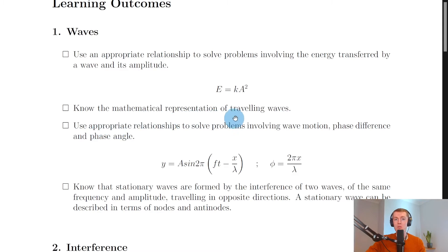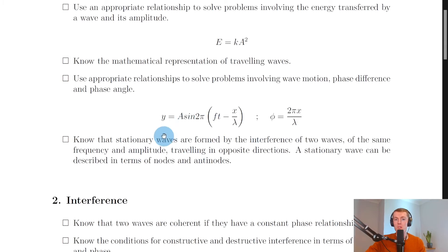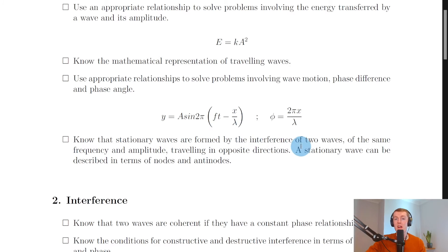You also need to know the mathematical representation of travelling waves and use appropriate relationships to solve problems involving wave motion, phase difference, and phase angle. The travelling wave equation is Y equals A sine of 2π times (fT minus x over λ), where Y is displacement, A is amplitude, f is frequency, T is time, x is distance, and λ is wavelength. For phase difference φ, we have φ equals 2πx over λ, where x is the distance between two points in a wave and λ is the wavelength.